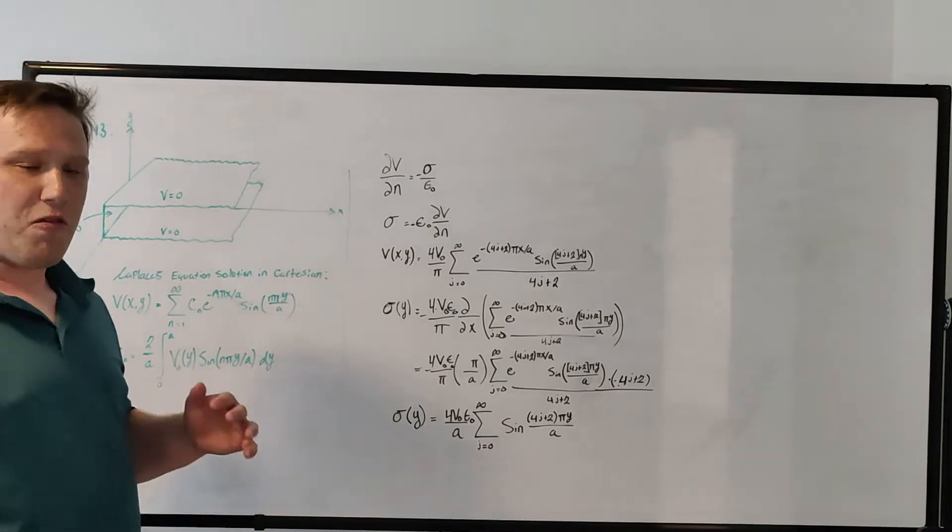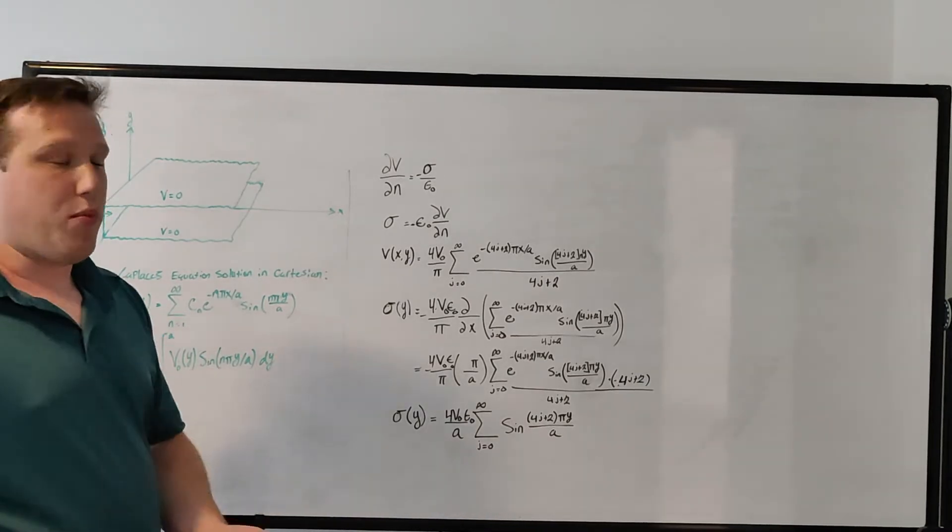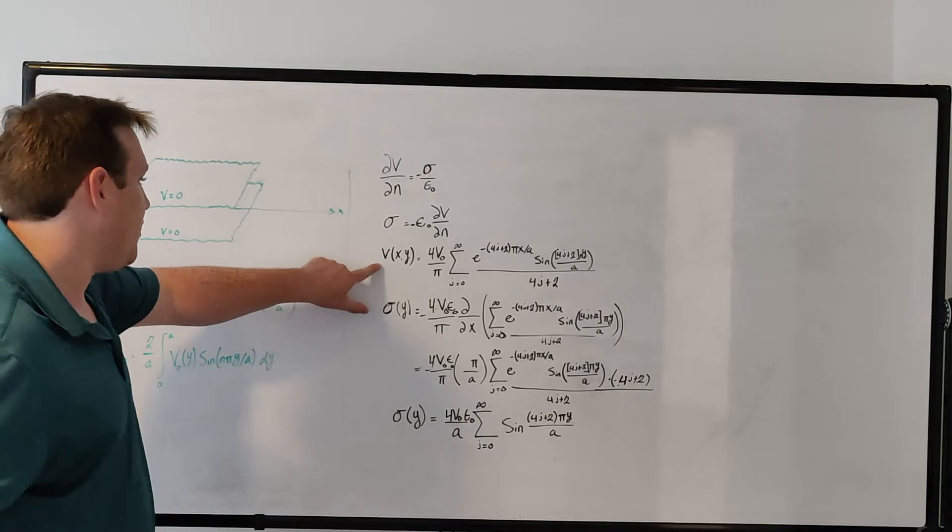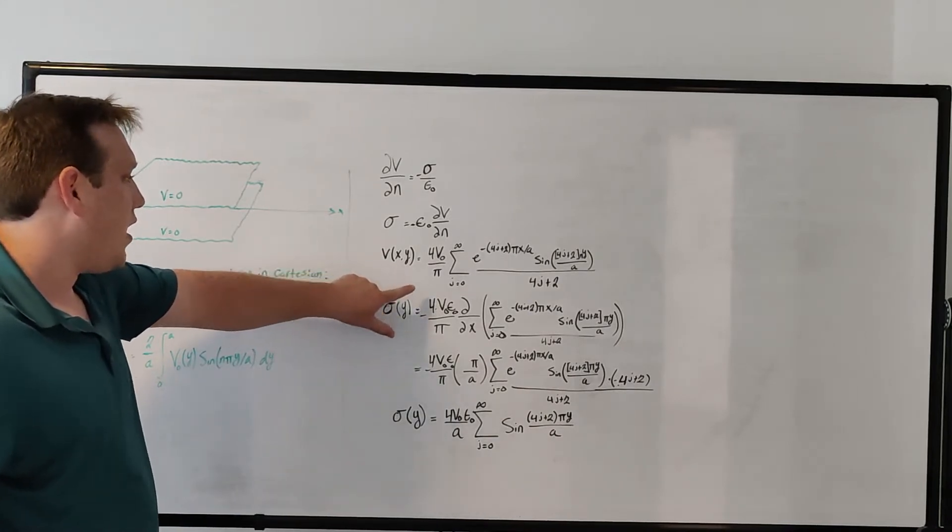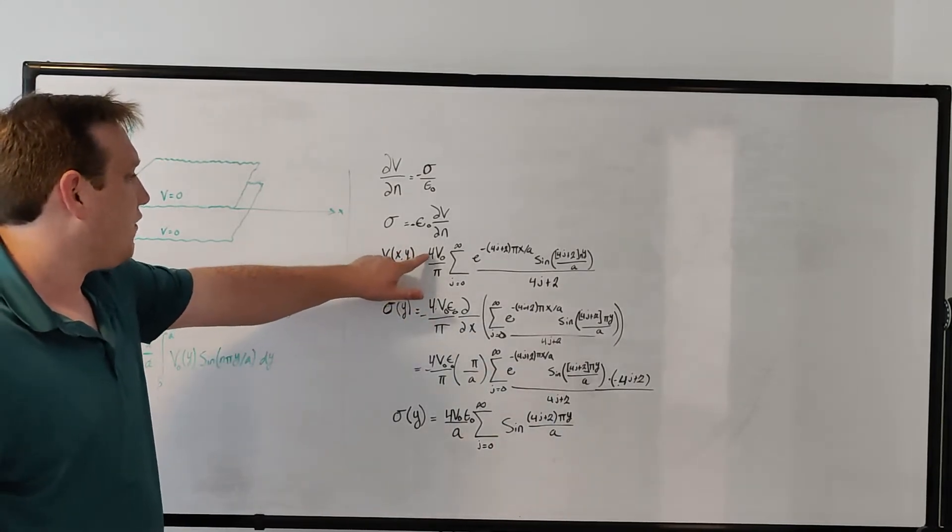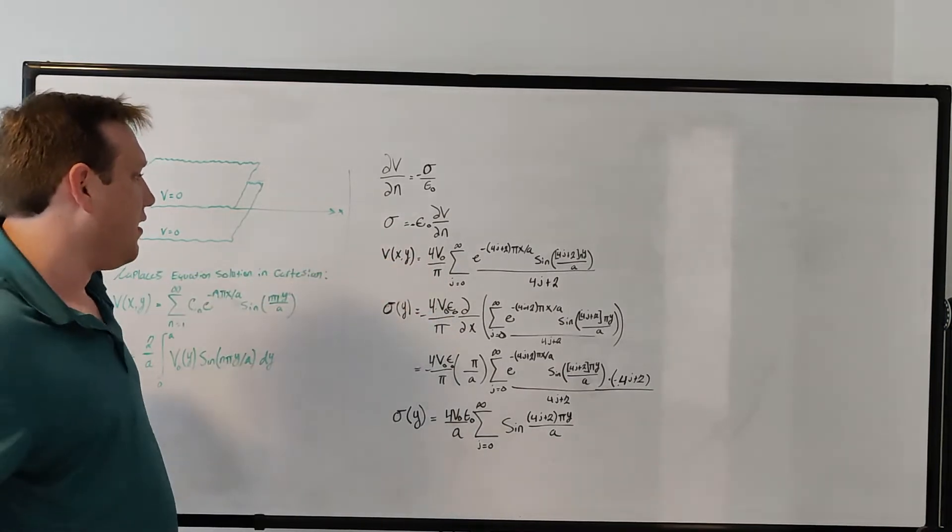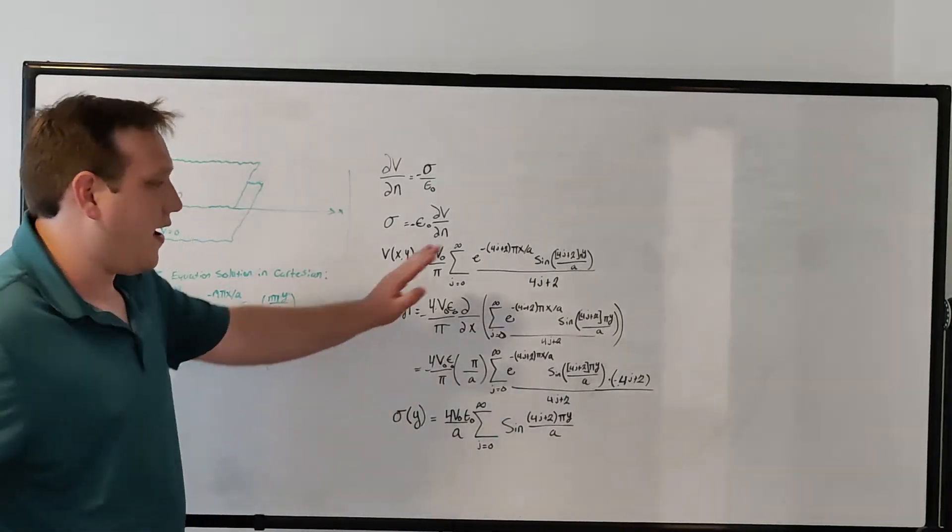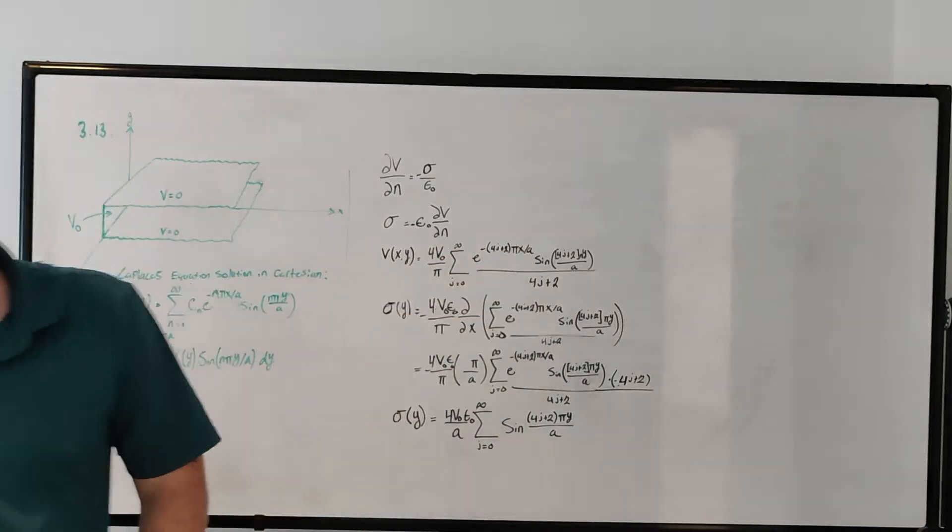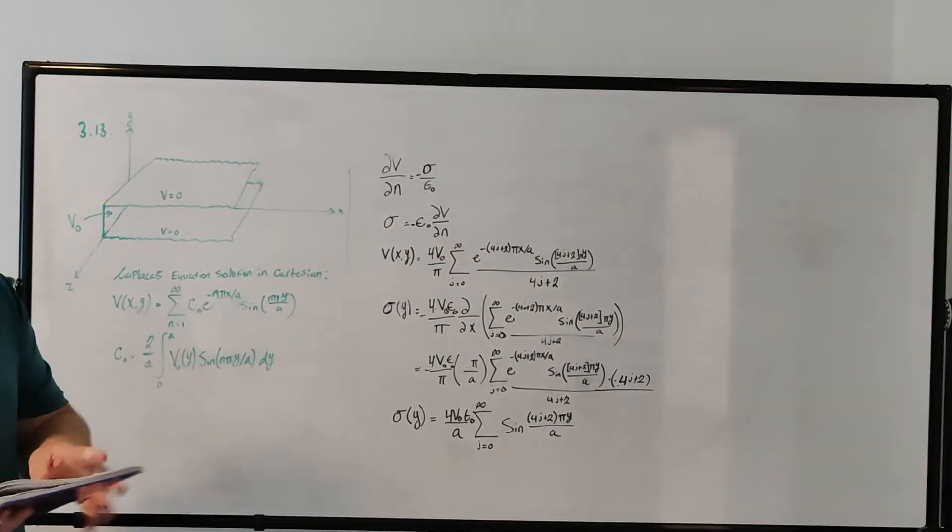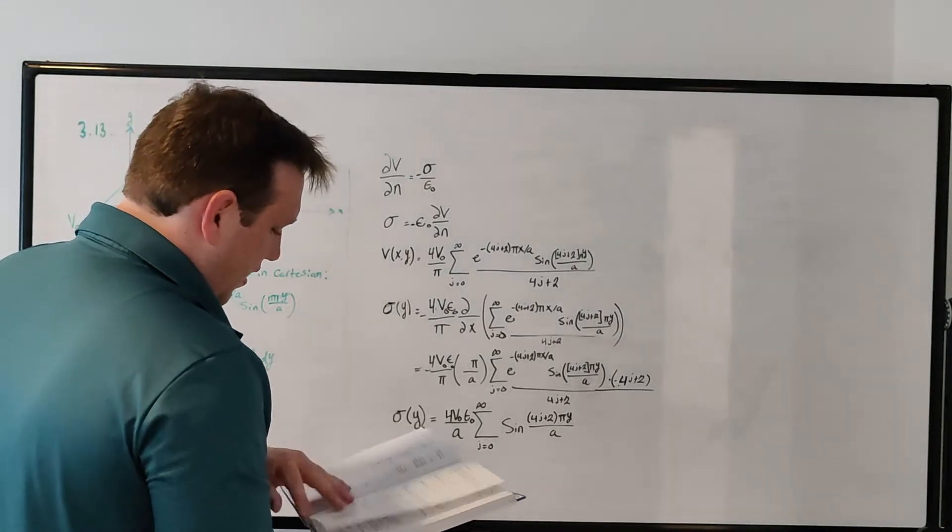From example 3.3 in the book, you can find that the potential function V of x,y is equal to this, already solved. So it's 4 V naught over pi, and I instead of n, I'm summing, it's the same notation here.